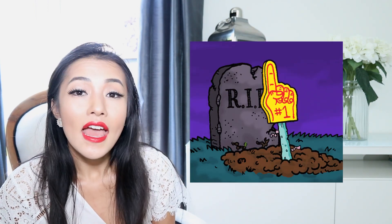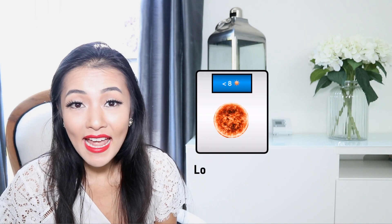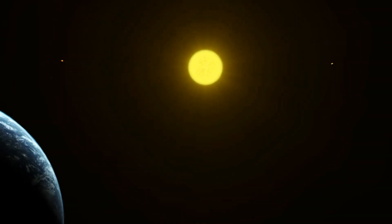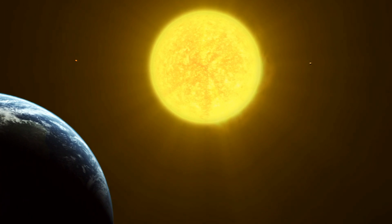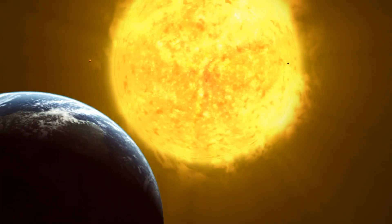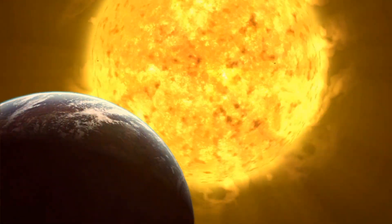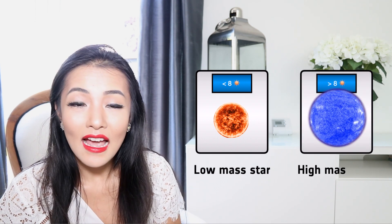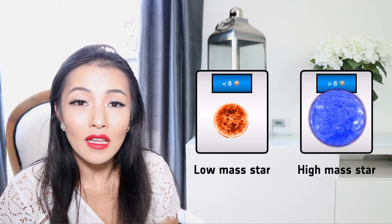The mass of the star determines what it will end up as at the end of its life. Low mass stars — those with less than eight times the mass of our Sun — will eventually expand out as a red giant star and then collapse down into a white dwarf, a low-luminosity compact astronomical object.